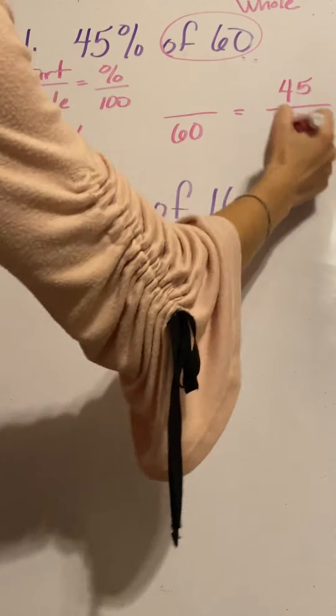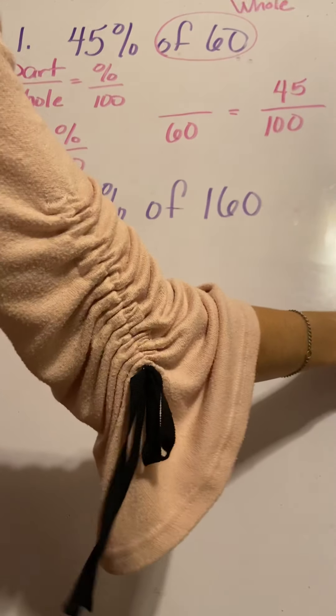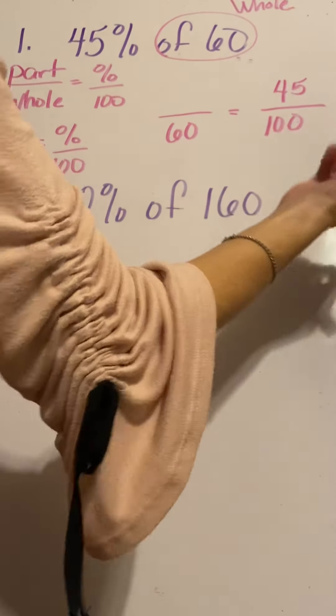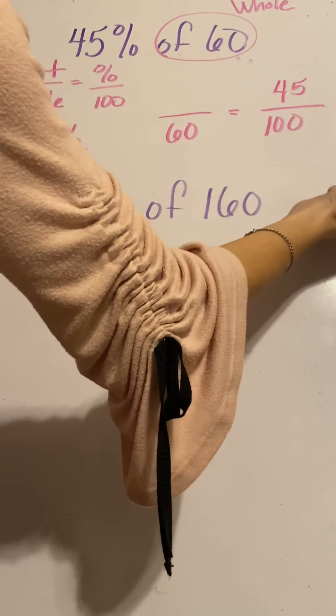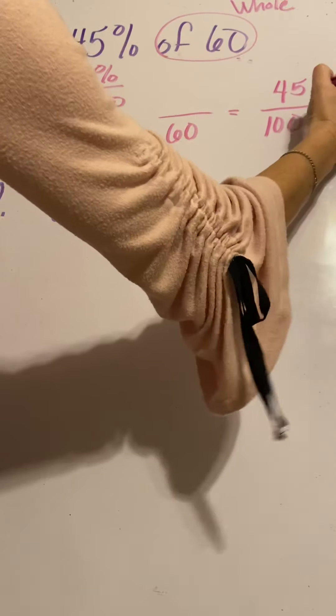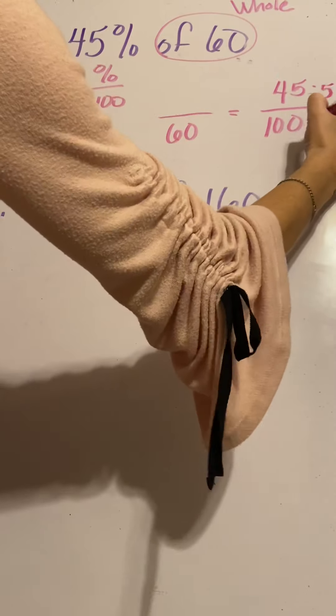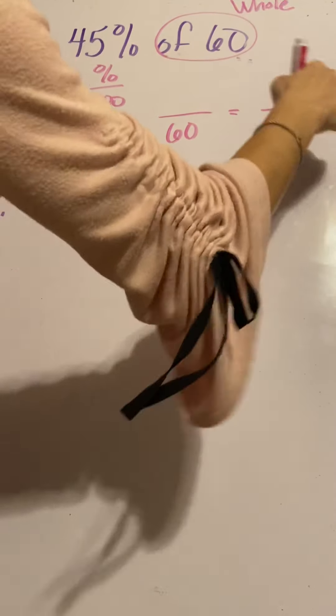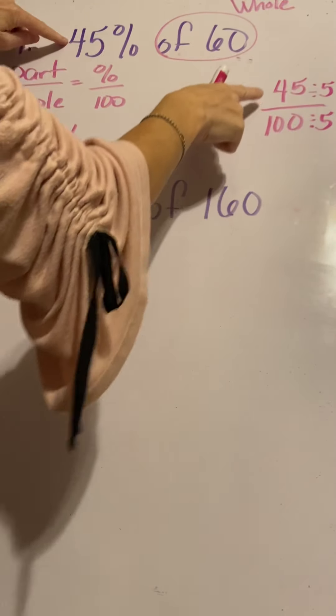So if you simplify this fraction, you can find something that will usually work. So 45 and 100 are both multiples of 5. So I can divide them both by 5. Simplifying this fraction. And that fraction came from the percent. Percent out of 100. 45%.